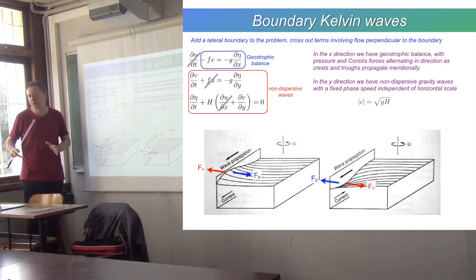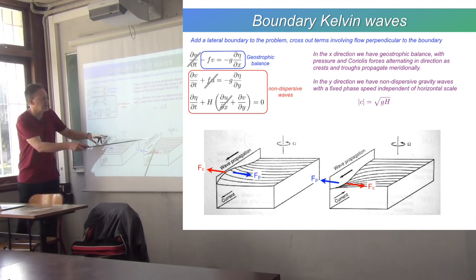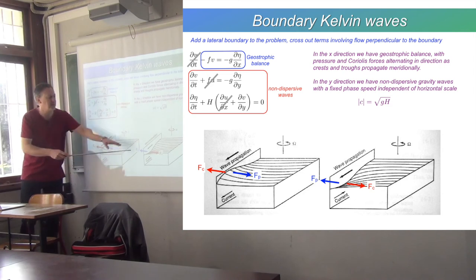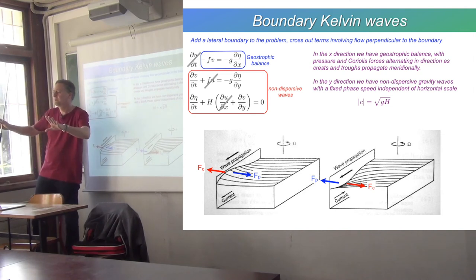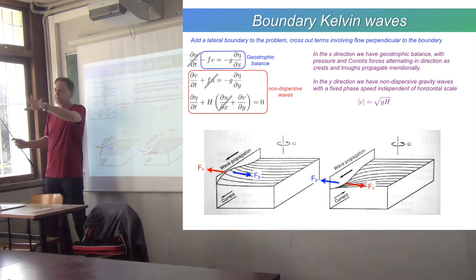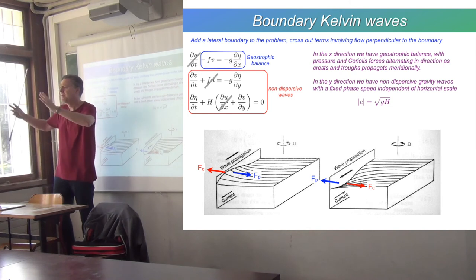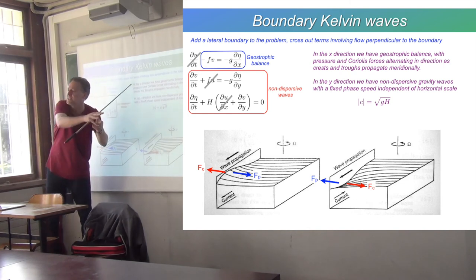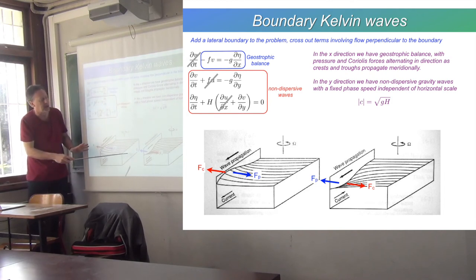You can think about the Coriolis force keeping them against the coast. The wave propagation is not the same thing as the current. The wave's propagating southwards, but the current is oscillating back and forth. Just like with an ordinary surface wave, you have a wave propagating at the surface and the currents going back and forth, round and round. But the wave itself is propagating in a single direction. It's the same for Kelvin waves.